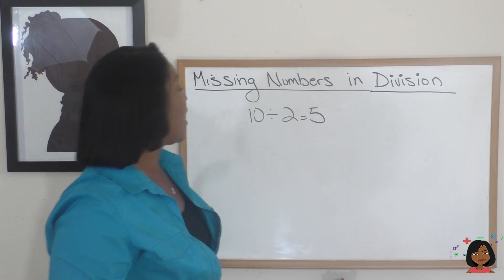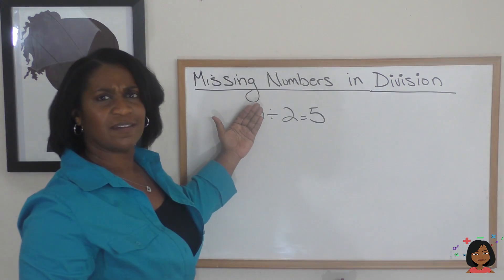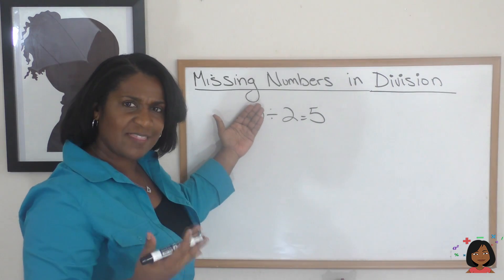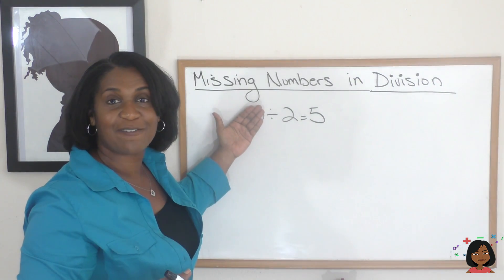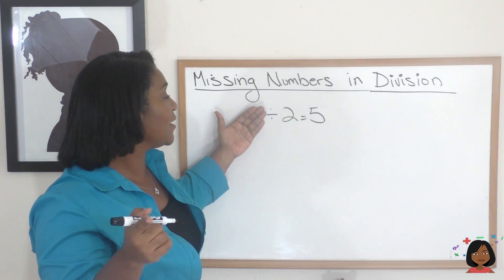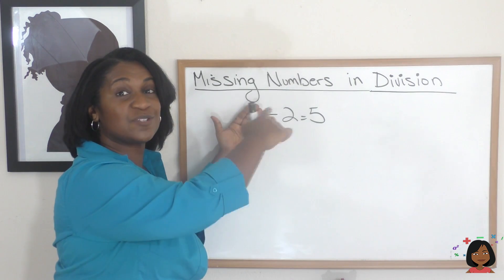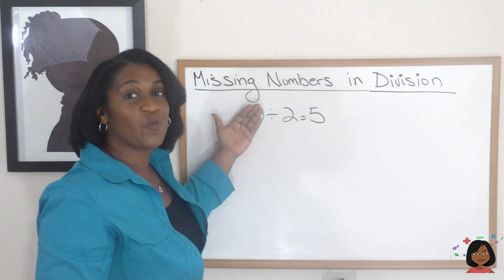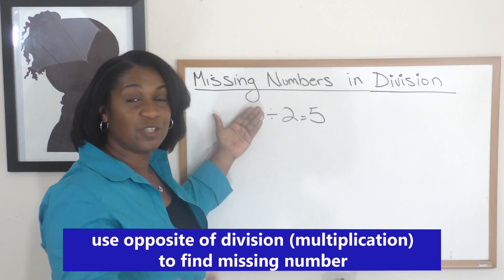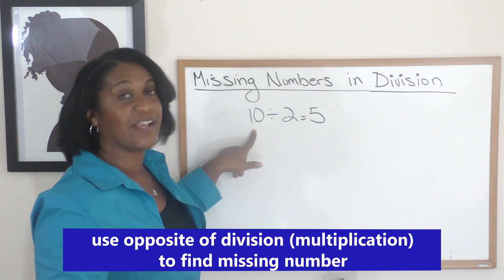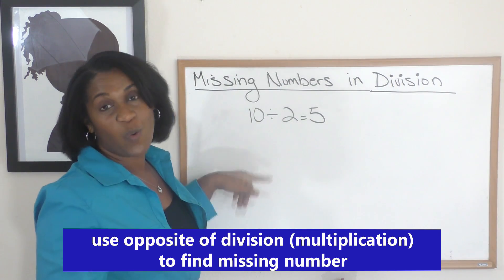And if I wanted to cover up the 10, how would I go ahead and find that number using the two numbers that I have? I know that you can see that 5 times 2 is 10, so we can use the opposite. We can use multiplication to help us find our missing number.